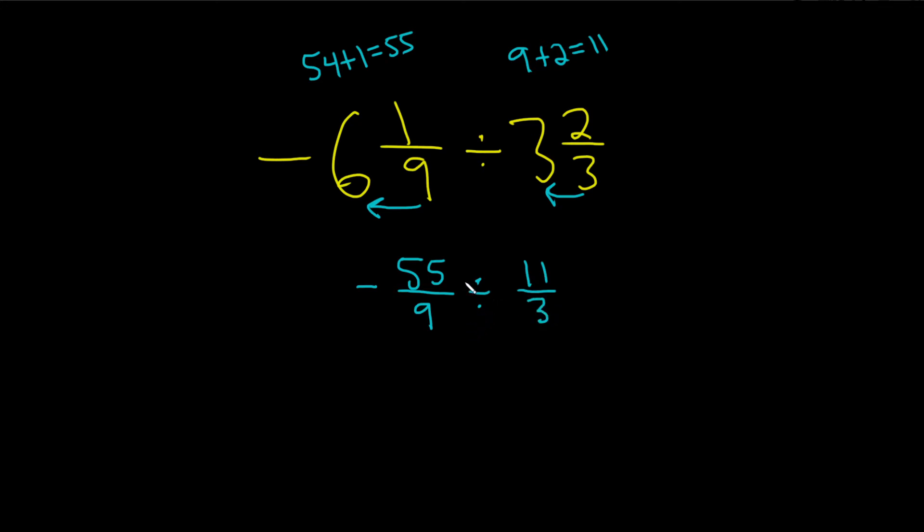Okay, because we're dividing, we're really multiplying by the reciprocal. So let's go ahead and write this down again. So negative 55 over 9, and then the division turns into multiplication, and then you flip this. That's how you get the reciprocal. So 3 over 11.